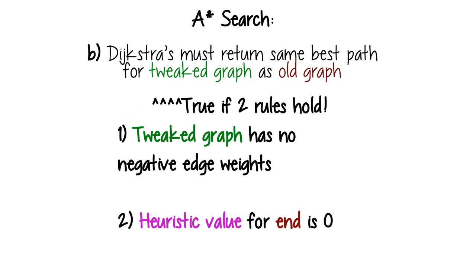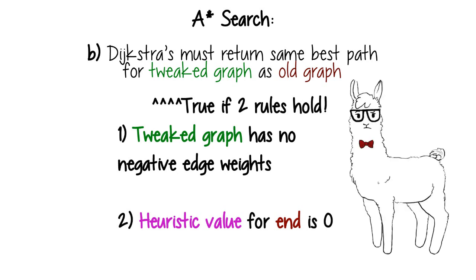Together, these two rules ensure that Dijkstra's always gives us the same best path as if we ran it on the old graph. The exact reason why is a little complicated, I'm still going to explain it, but if you don't want to hear it, feel free to skip this part.